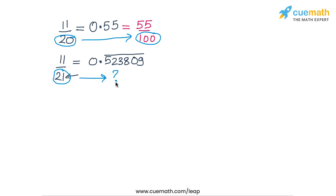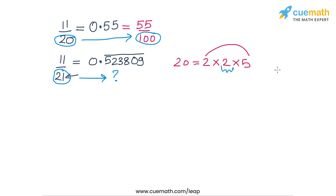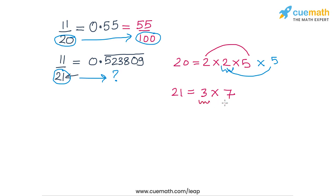So why can 20 be converted to 100 but 21 cannot be converted to any power of 10? The answer lies in the prime factorization. Now, 20 is 2 × 2 × 5 — it has only 2s and 5s. One pair of 2 and 5 makes a 10; the other 2 is alone, but if I multiply 20 by 5, I complete this second pair to make another 10, and hence I get 100. So 20 can be converted to 100 by multiplying by 5. But 21 is 3 × 7 — no matter what factor I multiply it with, it can never become an exact power of 10 because it will always have a 3 and a 7 in it.